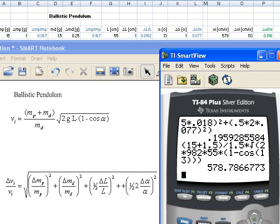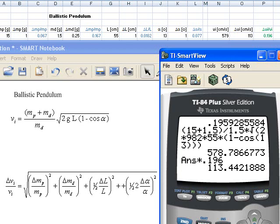And then I hit enter, and I come up with a result of 579 centimeters per second, is the speed, and I multiply that with my error of 0.196, relatively large error, so it's plus minus 113 centimeters per second.